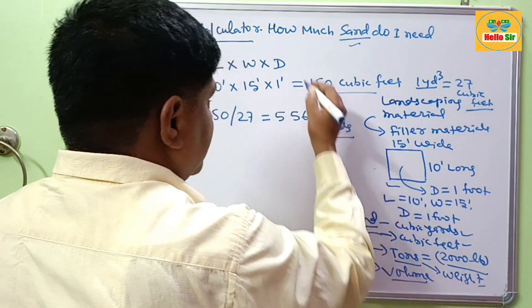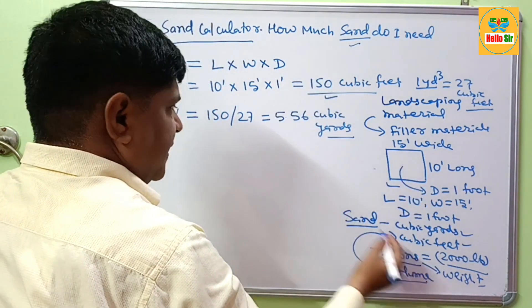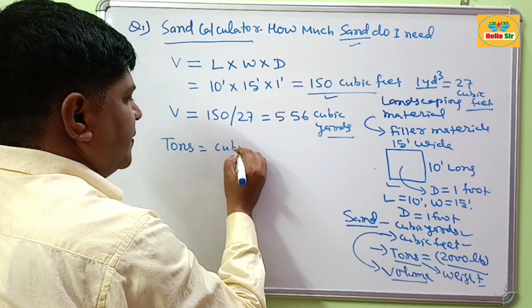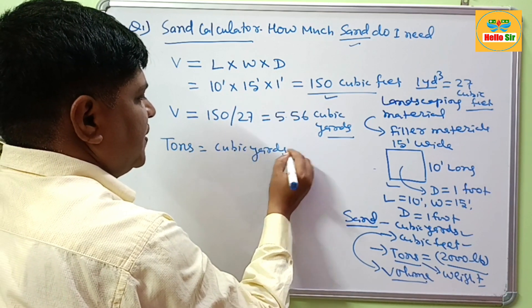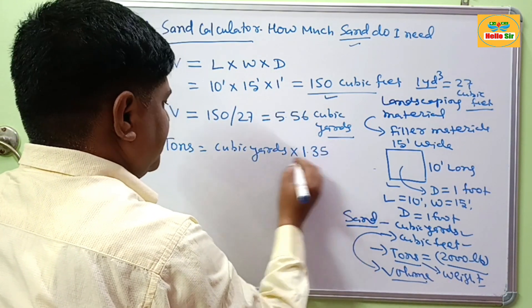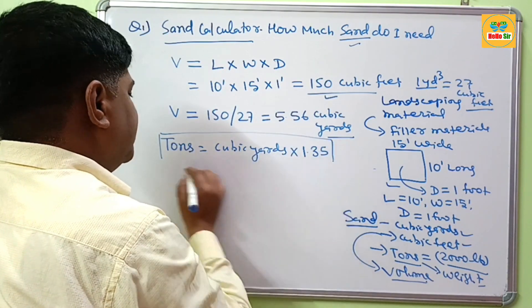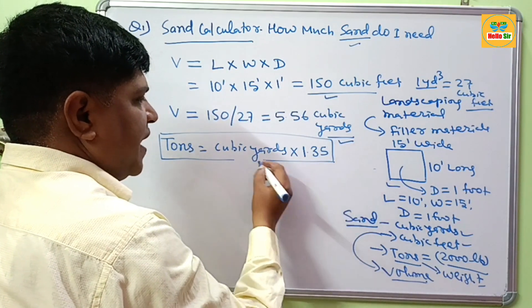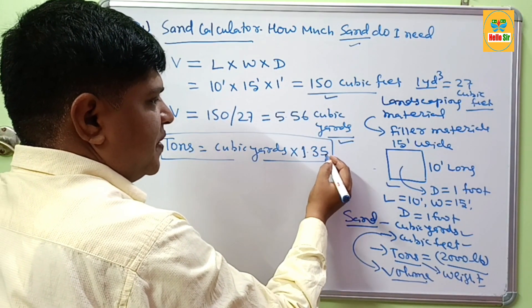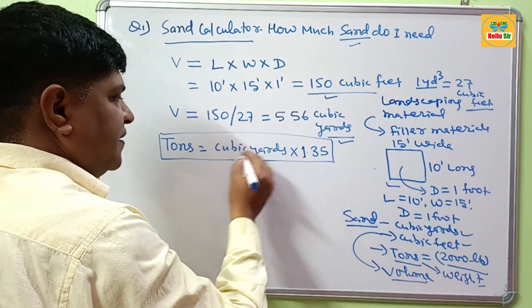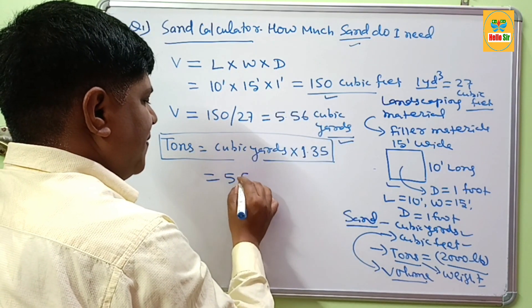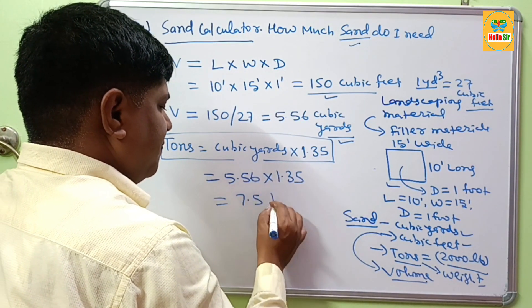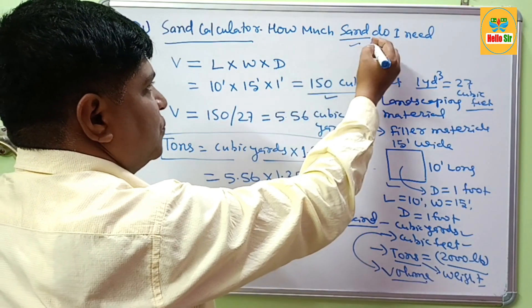If you want to calculate the sand amount for this project in tons, this is imperial tons. Your cubic yard measurement is multiplied by a factor of 1.35. This is the formula. Always remember this for the calculation of sand quantity in tons. If your given measurement is in cubic yards, multiply cubic yards by 1.35 to find imperial tons. Your cubic yard is 5.56 multiplied by 1.35, this will come to 7.5 tons.